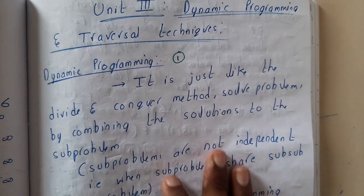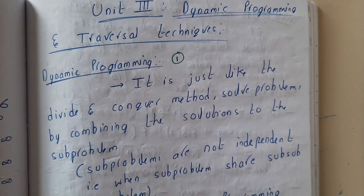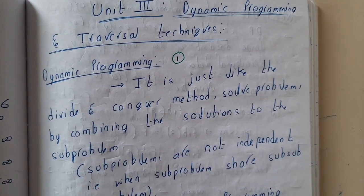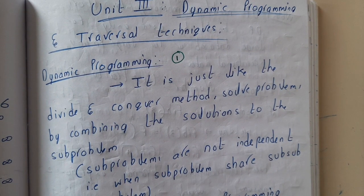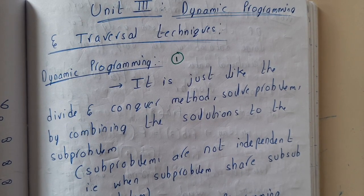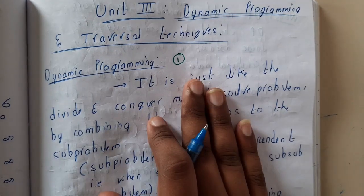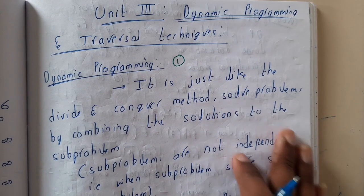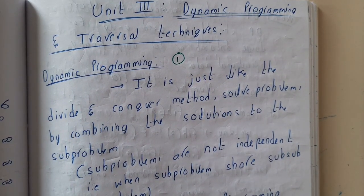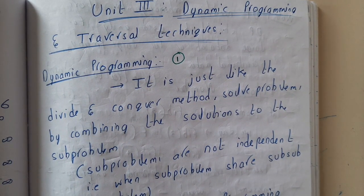The first question that comes to mind is: what is dynamic programming? In our last lectures we started with divide and conquer, then we moved to the greedy approach — greedy for minimum or maximum — and now we are at dynamic programming.